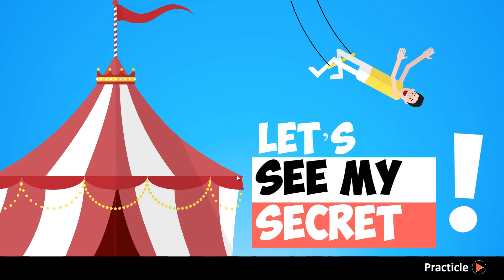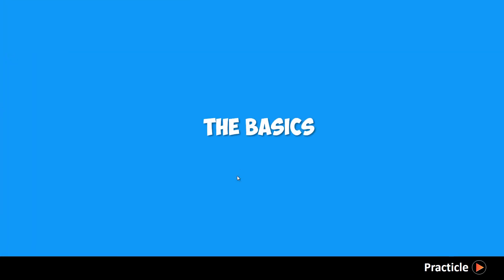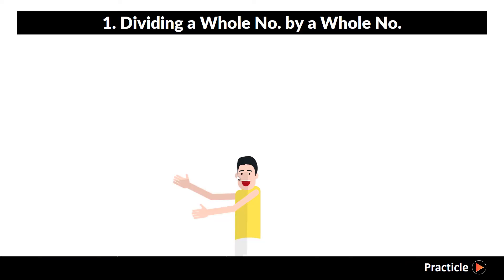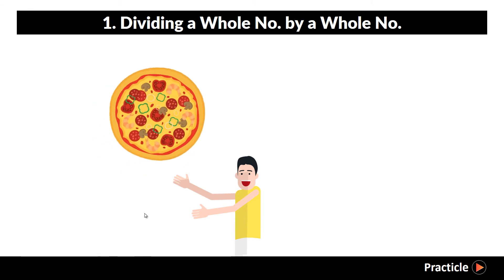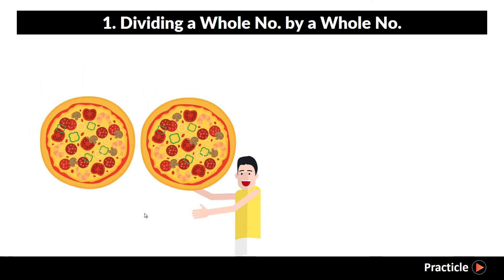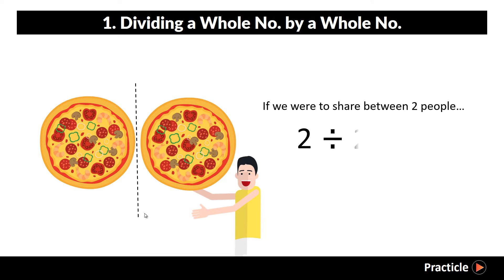Before we learn about dividing fractions, let's see what we already know about division. So let's start with dividing a whole number by a whole number. Here we have two pizzas. Let's say we want to share these two pizzas between you and me. How can we work out the number of pizzas each of us gets? We simply take the two pizzas and divide them by two. So two divided by two will give us one — each of us gets one pizza. Well, that's not too tough.